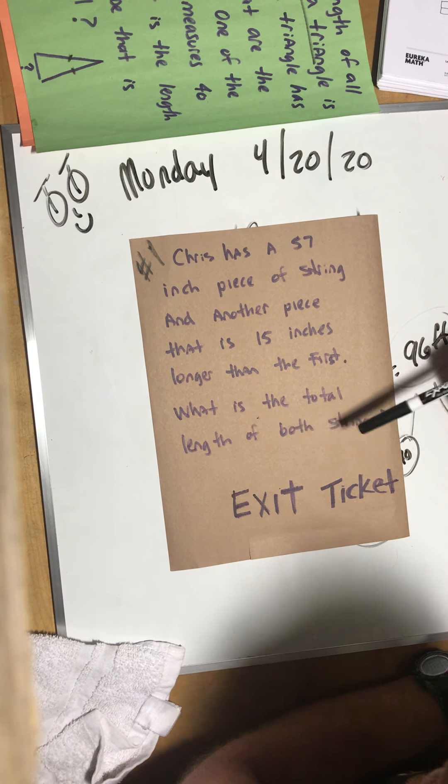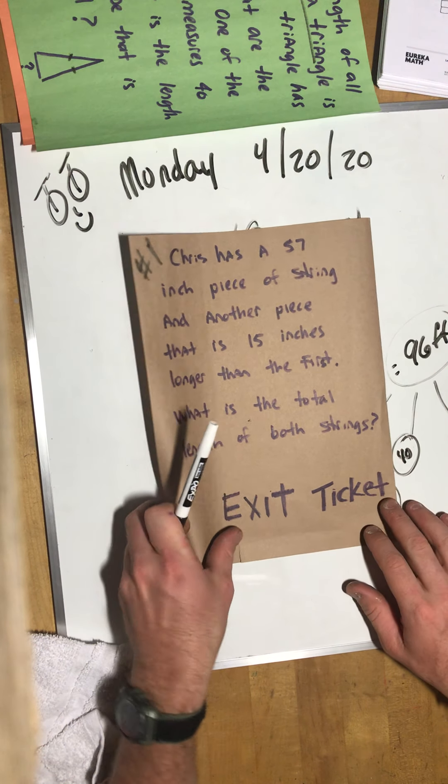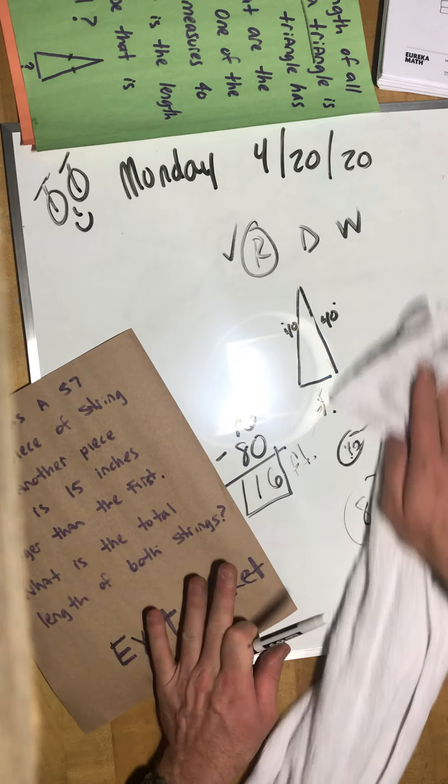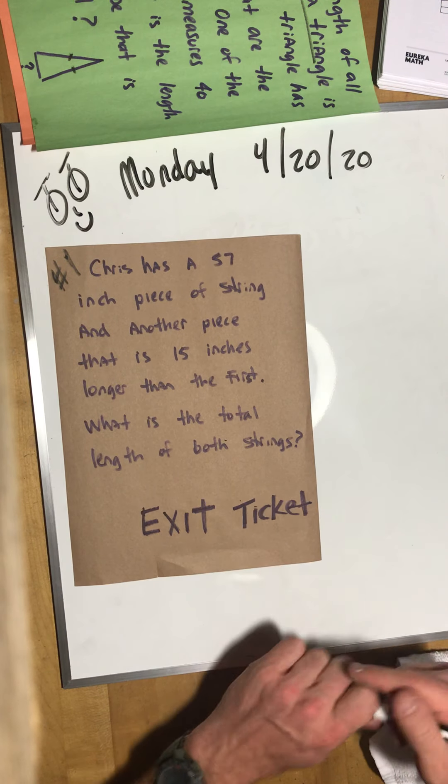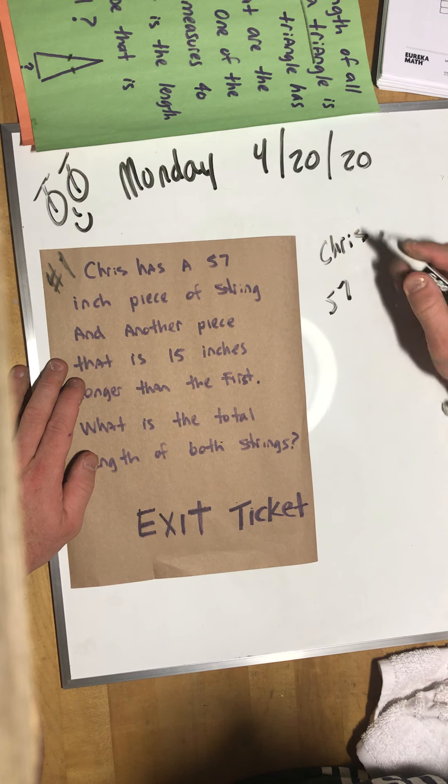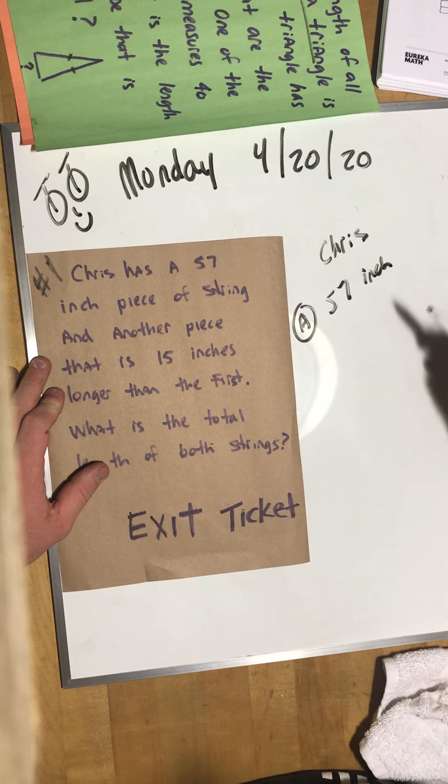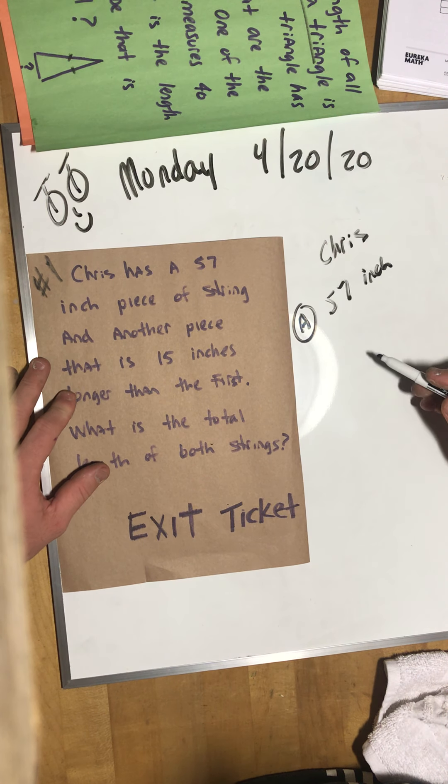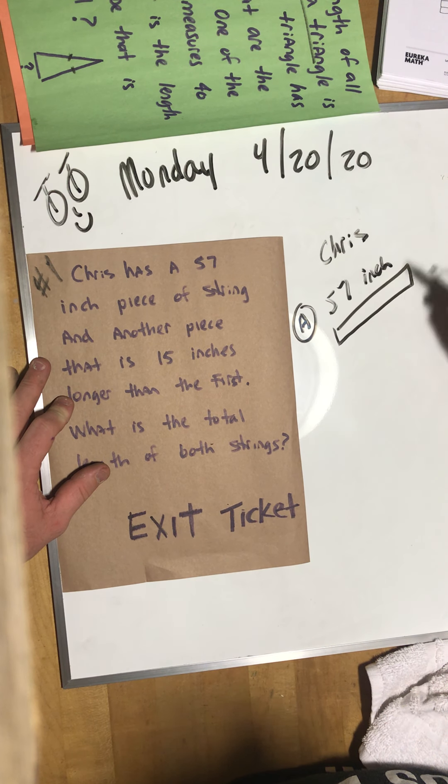Let's get organized. I'm going to clear this off from problem number two. Chris, take notes if you need it, has a 57 inch piece of string. 57 inch piece, we'll call that piece A. And another piece that is 15 inches shorter. Let's draw our two tape diagrams. This one's 57.